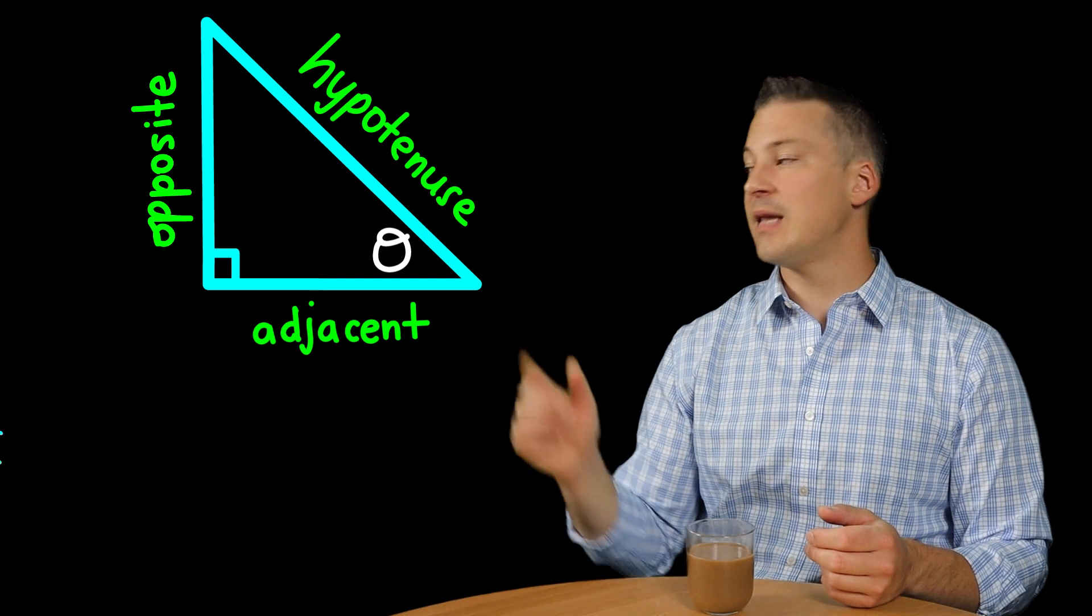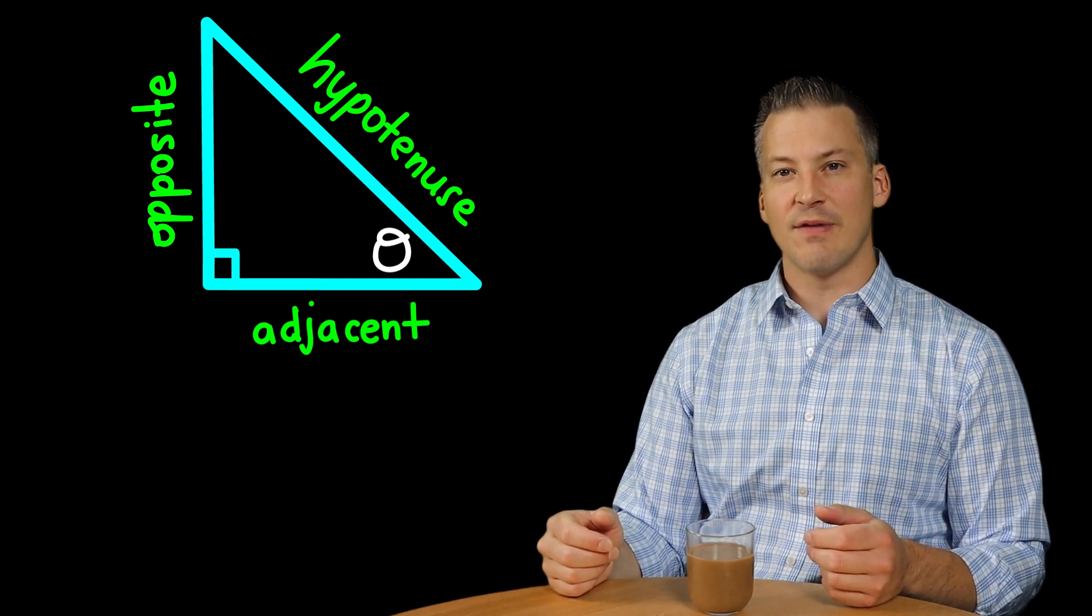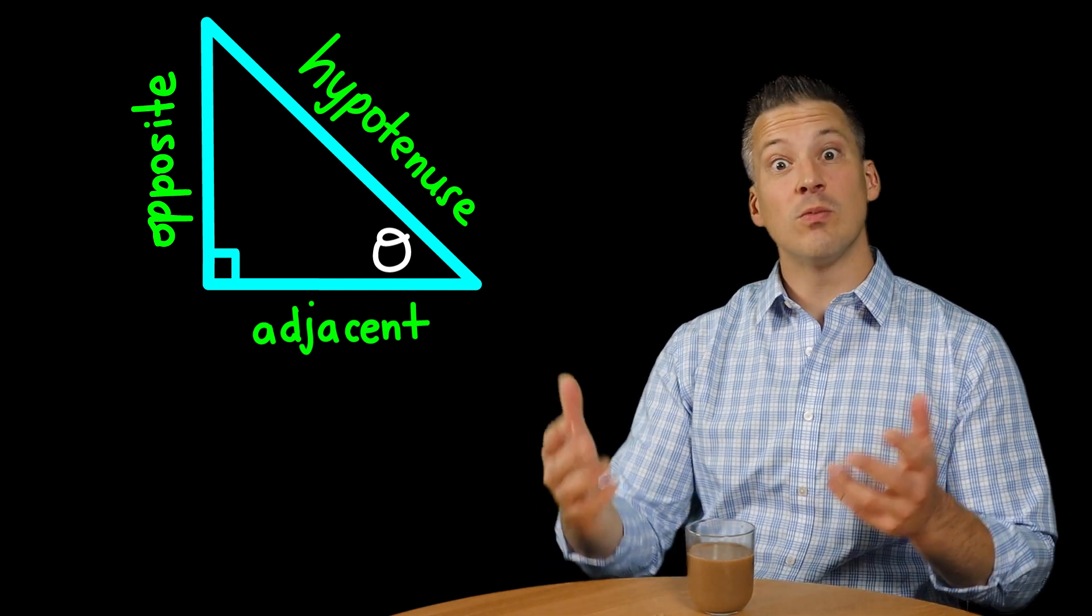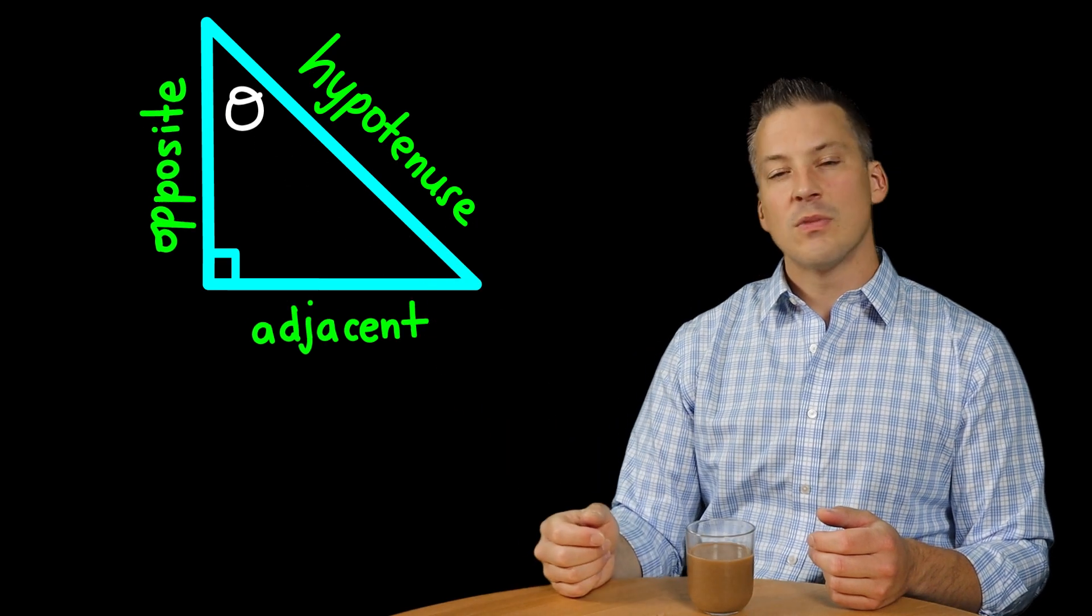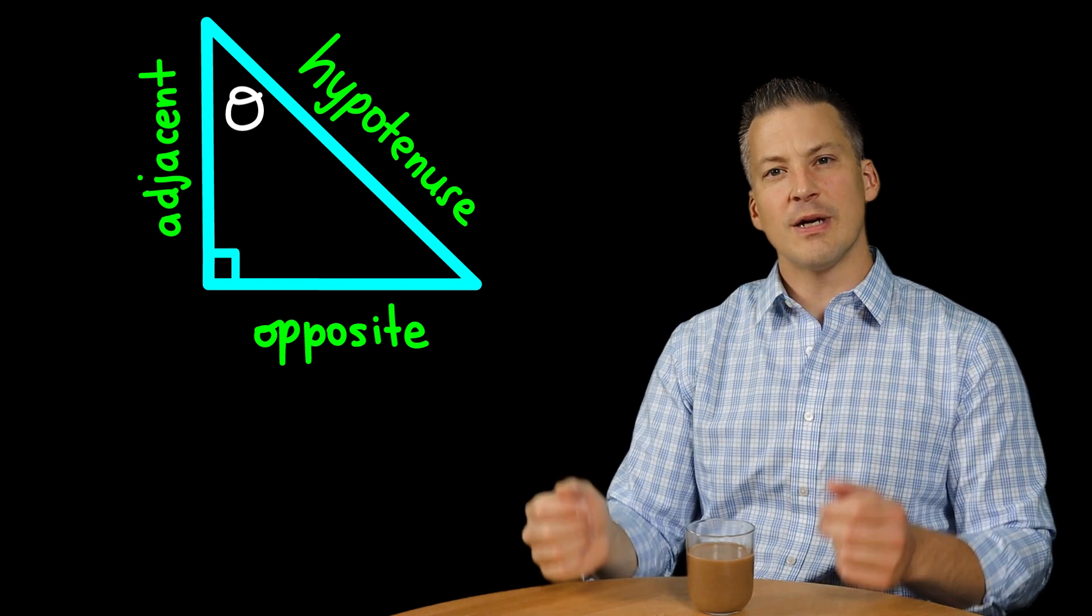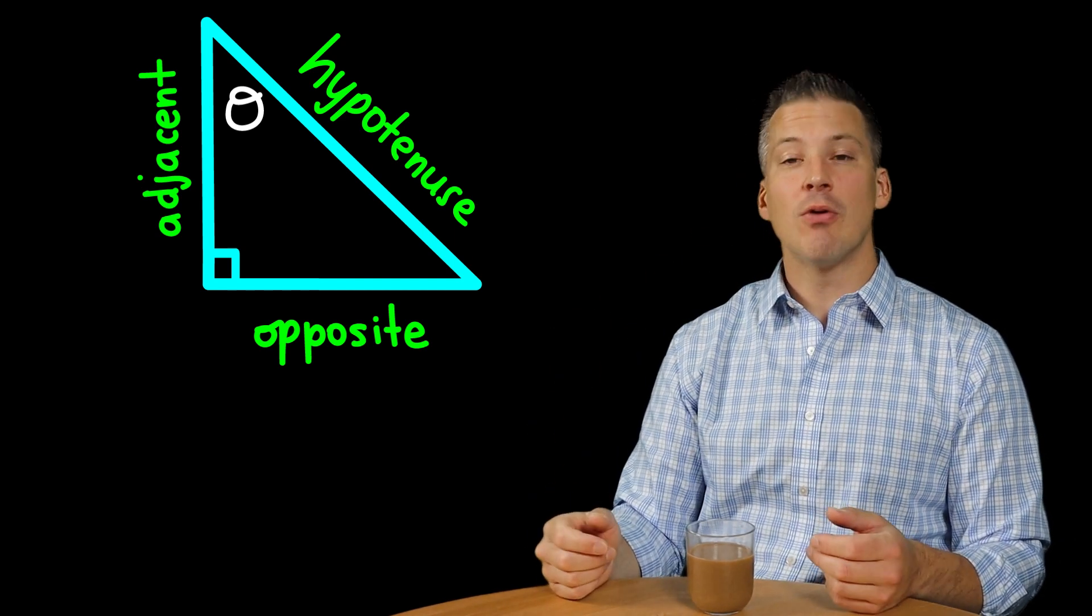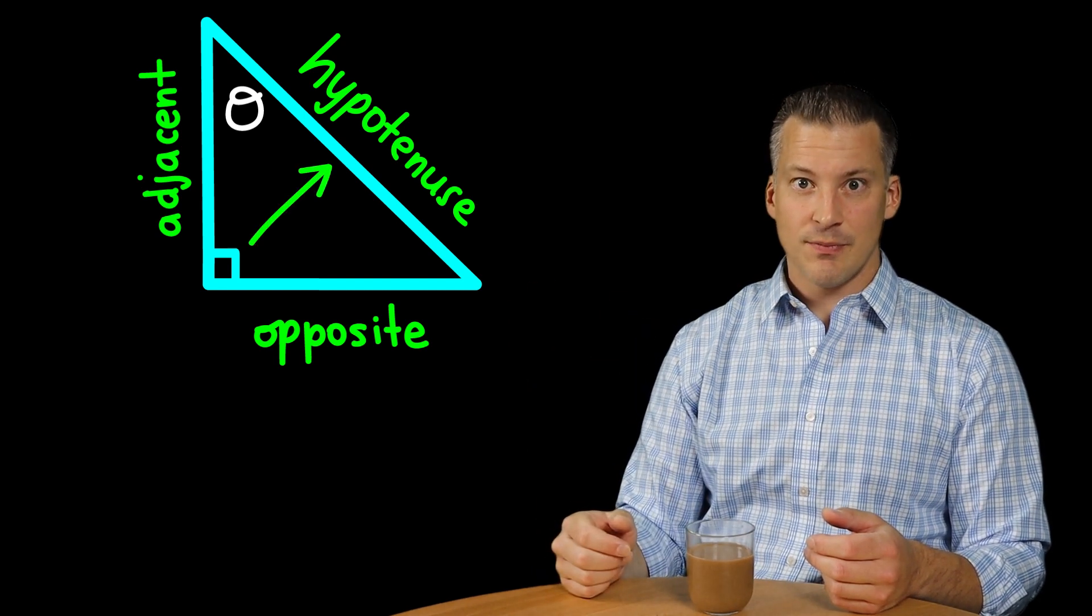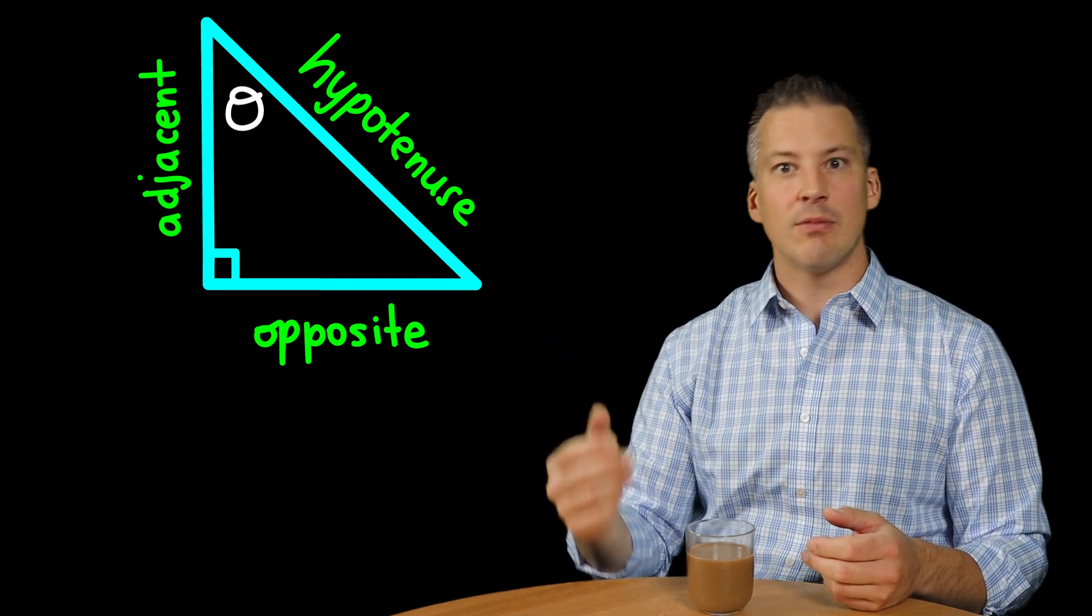And what happens if that angle moves? Or if we want to reference a different angle inside of that right triangle? Well, the terms then opposite and adjacent will move along with that angle. Here, watch. Look. See that theta move? And what happened to those terms opposite and adjacent? They kind of switched, right? But what did you notice about the hypotenuse? It didn't go anywhere. The hypotenuse is always across from the right angle, no matter what. So those terms opposite and adjacent are relative to the angle that we're referencing.